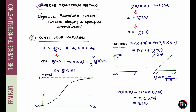The objective we have is to study a technique that can help us simulate various realizations of a random variable, given that this random variable has a specified distribution. The realizations or simulations should obey or respect that distribution. We will tackle this technique of inverse transform using two cases: the case of a continuous variable and the case of a discrete variable.